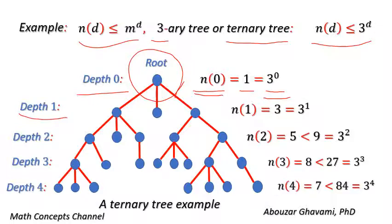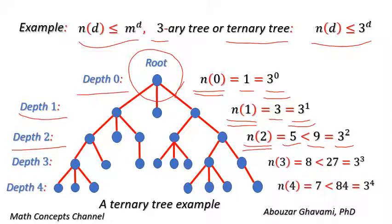In depth 1, we have 3 nodes. Therefore, N(1) equals 3, and 3 equals 3 to the power of 1. Thus, N(1) equals 3 to the power of 1. In depth 2, we have 5 nodes, and 5 is less than 9, and 9 equals 3 to the power of 2. Thus, N(2) is less than 3 to the power of 2. In depth 3, we have 8 nodes, and 8 is less than 27, and 27 equals 3 to the power of 3. Thus, N(3) is less than 3 to the power of 3.